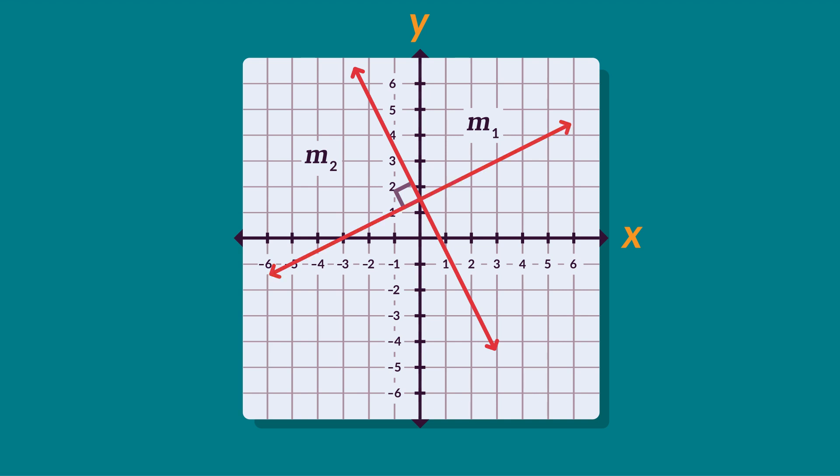Line 1 has a gradient of M1 equals one half. Line 2 is perpendicular to line 1 and the gradient M2 equals negative 2. What do we notice about the gradients M1 and M2?